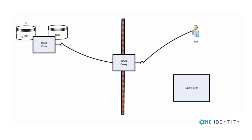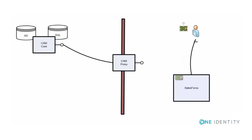Once we've authenticated the user, we look in the policy database and say: we know who the user is, we know the target he's trying to reach — is he allowed? It says yes, go ahead and generate a token. We generate a SAML token and send it back through the proxy to Joe, with an instruction to go back to Salesforce and log in. He posts his SAML token into Salesforce, Salesforce reads it, knows it came from a trusted source, and Joe is essentially logged in. He now has a cookie here, and there's a cookie on the proxy server.